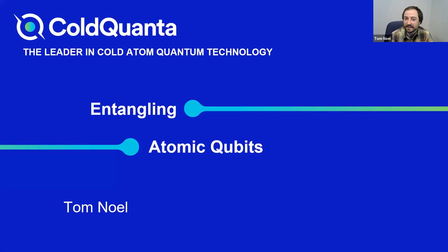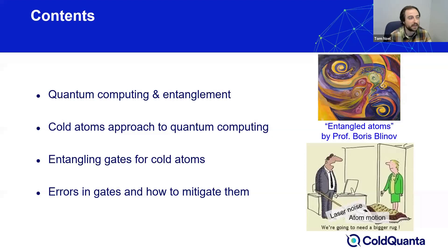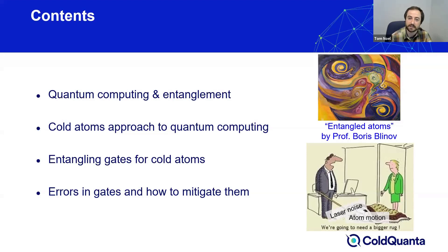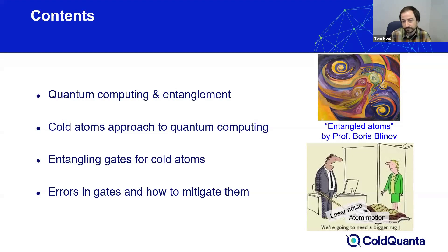Thanks for the introduction, Matt, and thanks everybody for joining. Today I'll be talking about quantum computing and the role of entanglement, dwelling on why entanglement gives rise to strange and non-classical phenomena — phenomena that are artistically rendered in a painting by my thesis advisor, Boris Plinov. Then I'll switch gears and discuss the cold atom approach to quantum computing, paying closest attention to one particular Rydberg blockade-based entangling gate protocol, followed by a discussion of errors and how to mitigate them through system engineering and design.